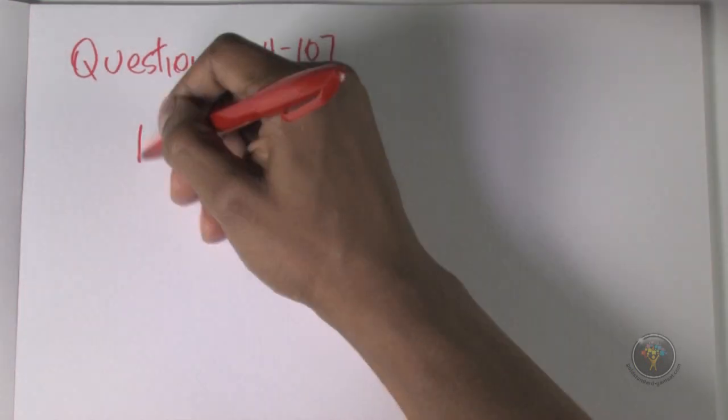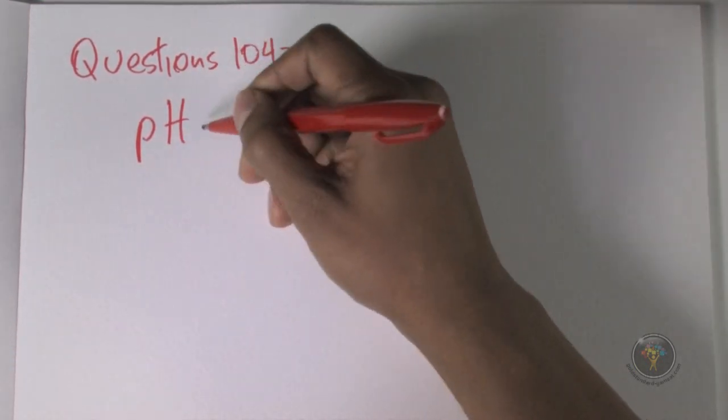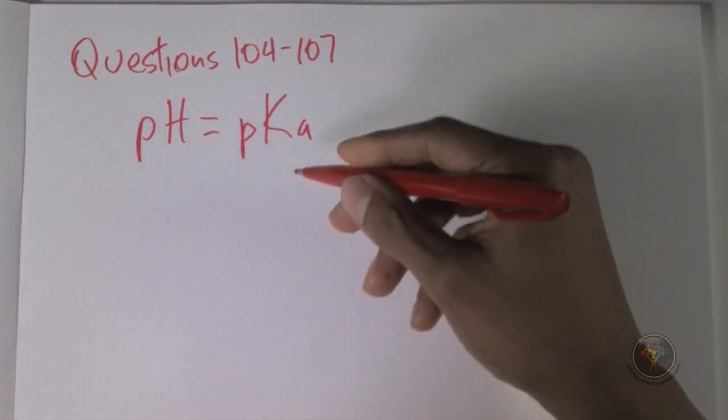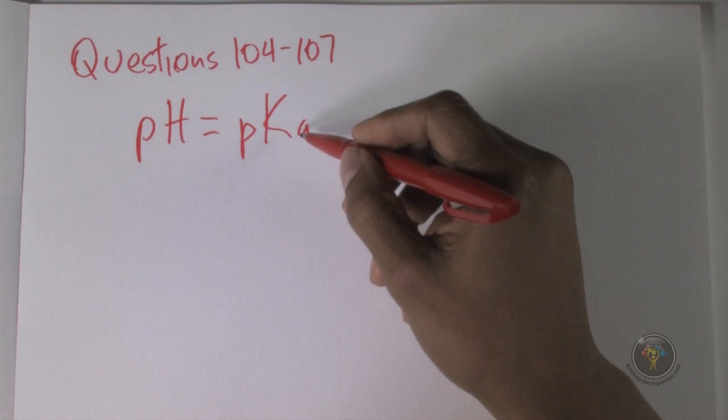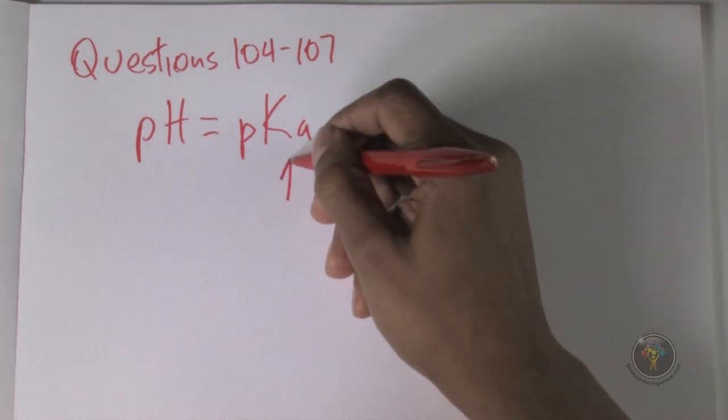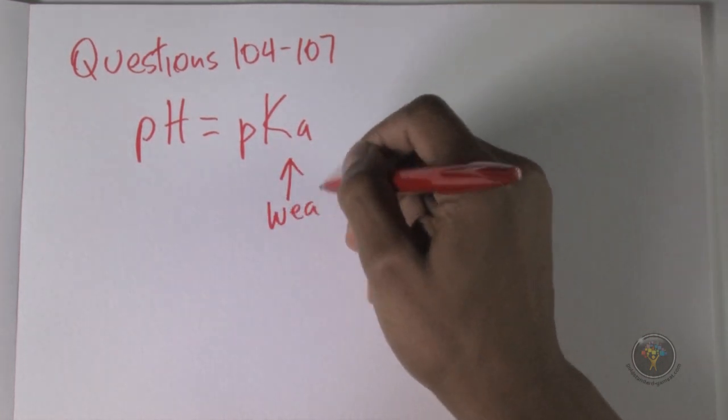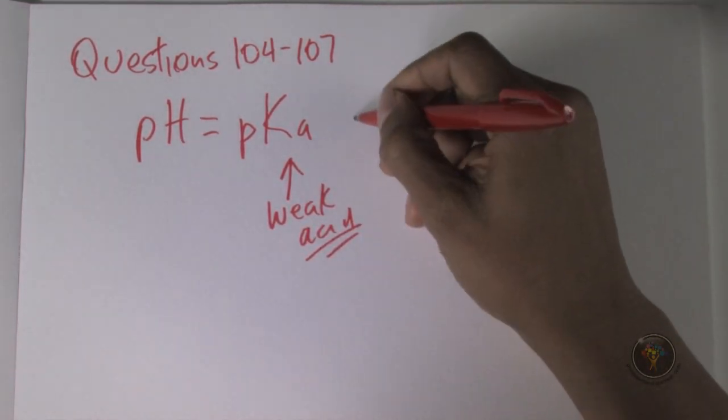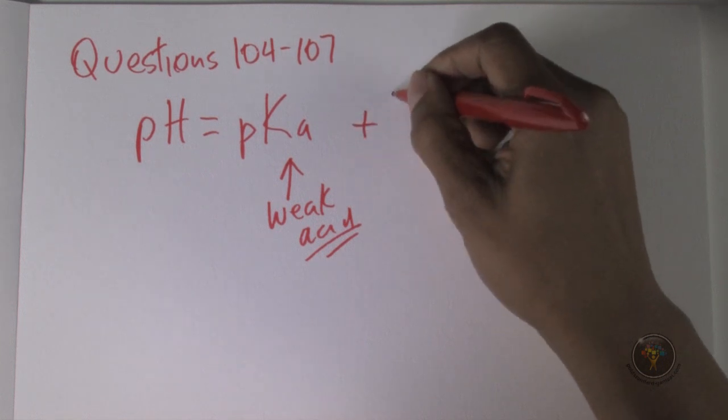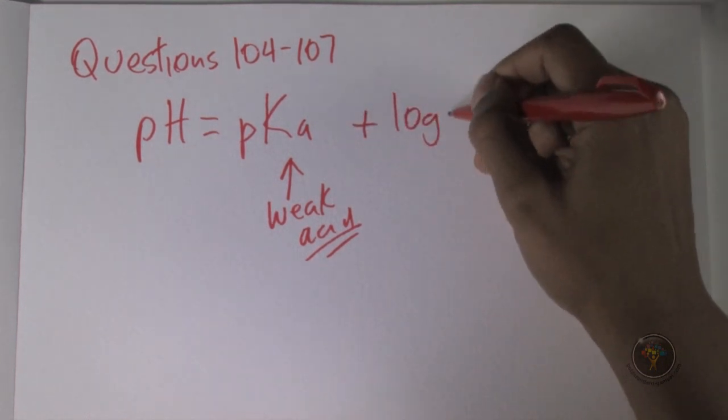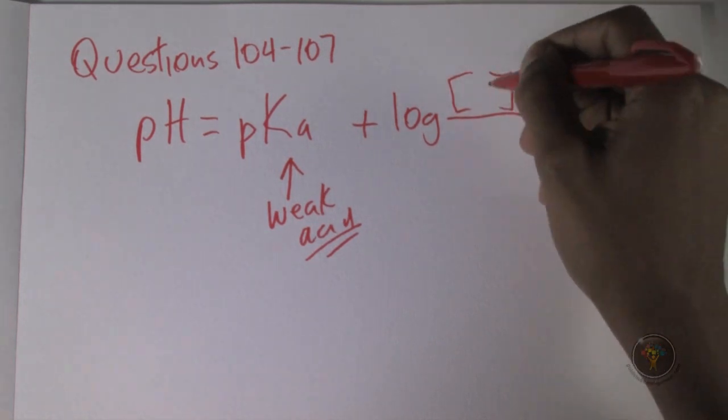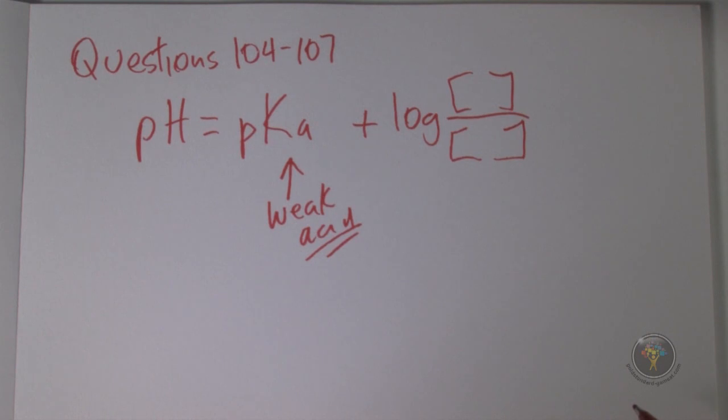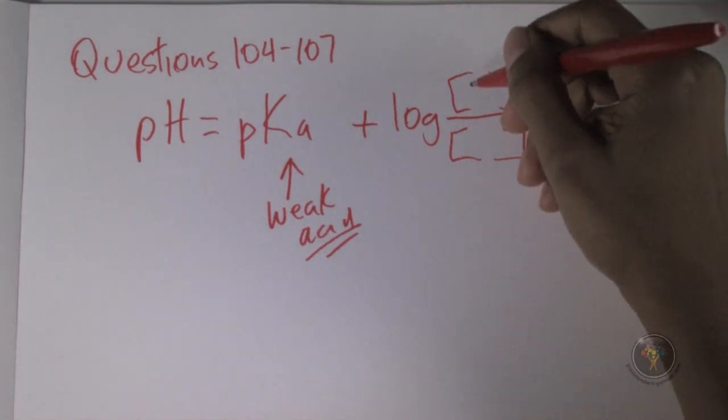To calculate the pH, we use the equation that has been provided to us, and pH is equal to pKa, and we're told that the Ka is the acidity constant of the weak acid, so this is for the weak acid. That's what they tell us right underneath the equation, and then plus log of the base, the conjugate base, over the acid.